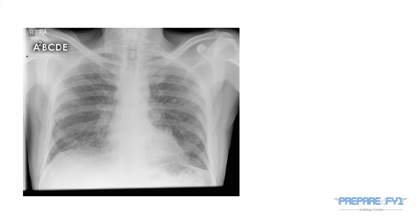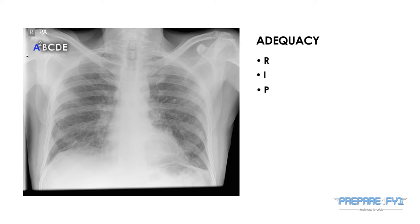Let us now consider the film itself. We will first consider the adequacy of the film, and you can use the mnemonic RIP. R stands for rotation, I for inspiration, and P for penetration.